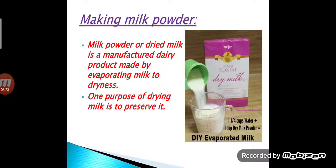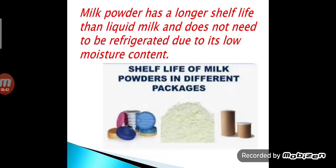The next method is making milk powder. Milk powder or dried milk is a manufactured dairy product made by evaporating milk to dryness. One purpose of drying milk is to preserve it. Milk powder has a longer shelf life than liquid milk and does not need to be refrigerated due to its low moisture content. Shelf life means the period of time during which the food product will remain the same.